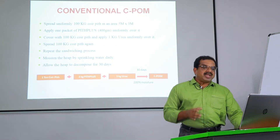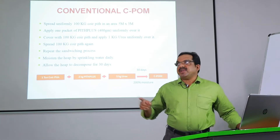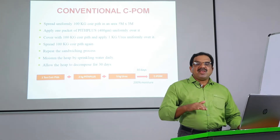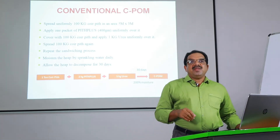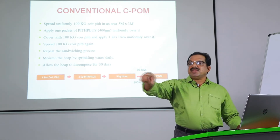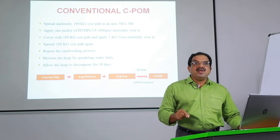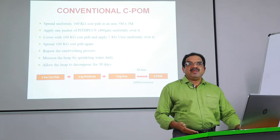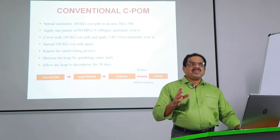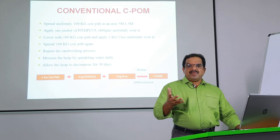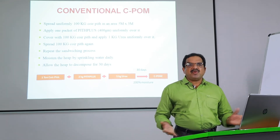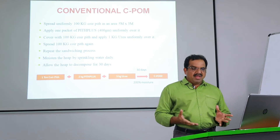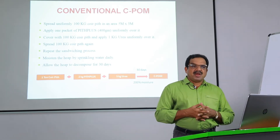This is the conventional process of coir pith organic manure production. First, you have to select an area of 5 meters length and 3 meters width — that is, 15 square meters. Then spread 100 kg of coir pith over that area. 100 kg is approximately 4 to 5 buckets or vessels that you can use.